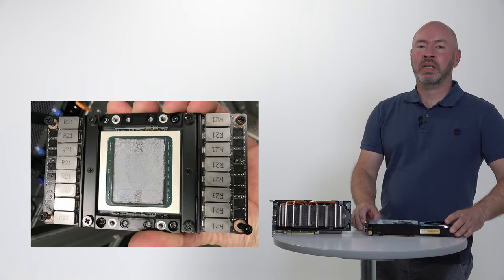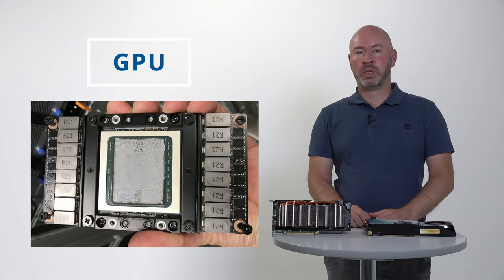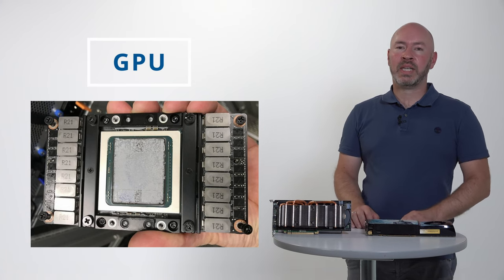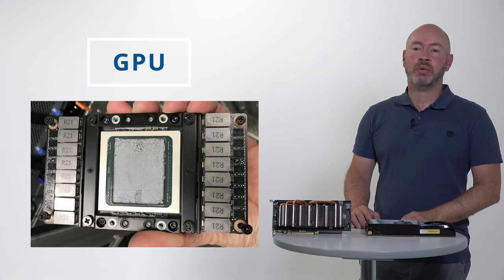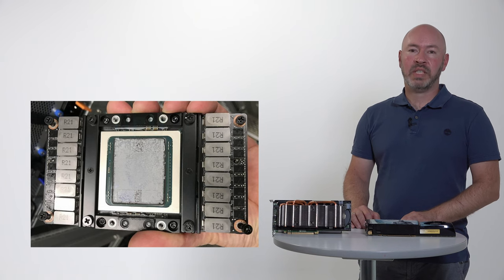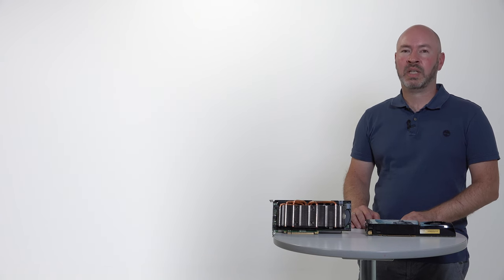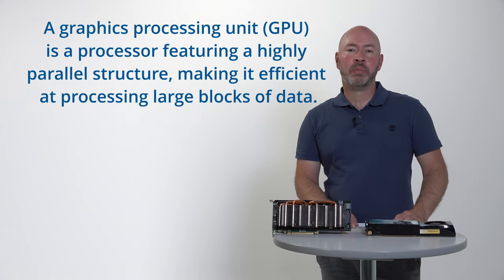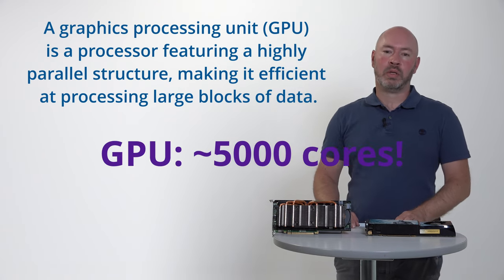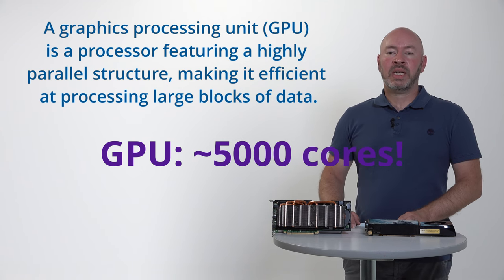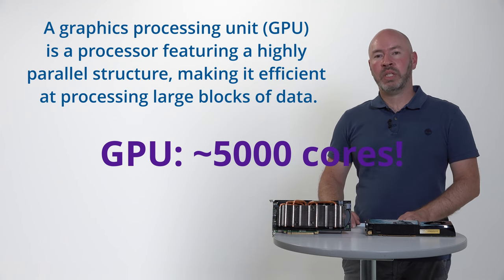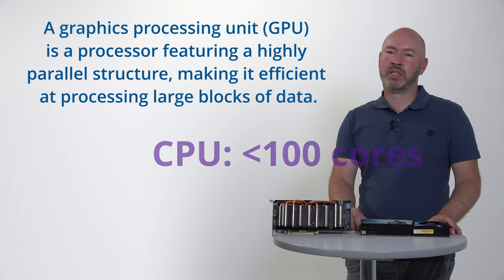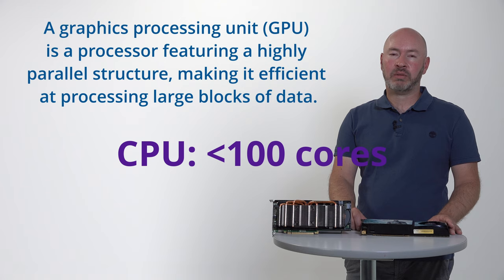The chip on the card is called Graphics Processing Unit, or GPU in short. Its computational power increased drastically, driven by the ever-increasing demand of the video game industry. It features a highly parallel structure of approximately 5000 compute cores that are capable of rendering a scene of a video game in real time. For comparison, a high-end CPU has currently less than 100 cores.